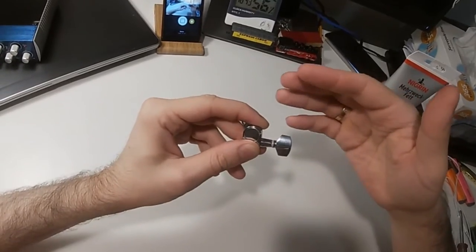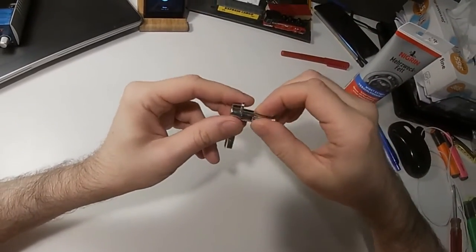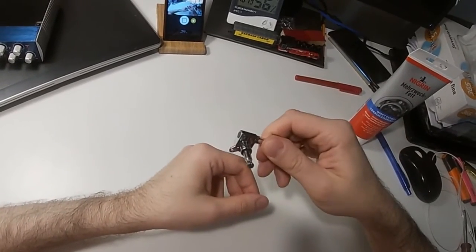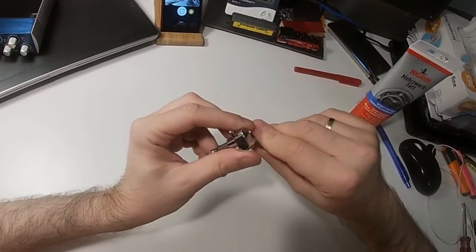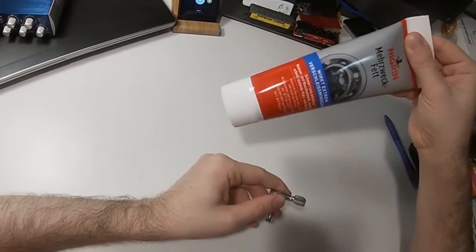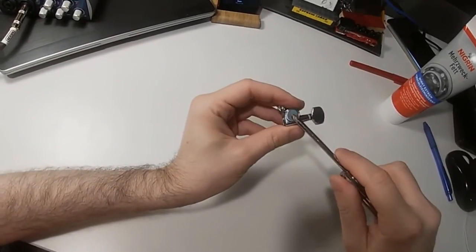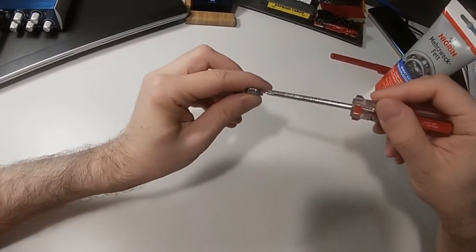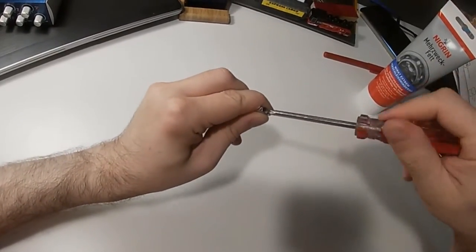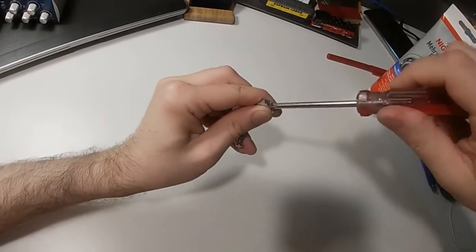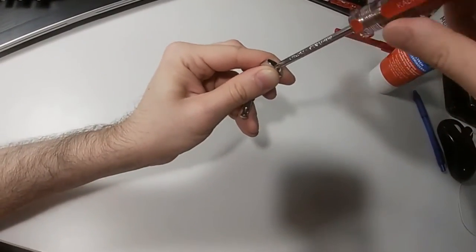So what do we need for this? We need to simply put some grease inside. How to do it if it's sealed? One of the easiest options is to remove this tuner knob.